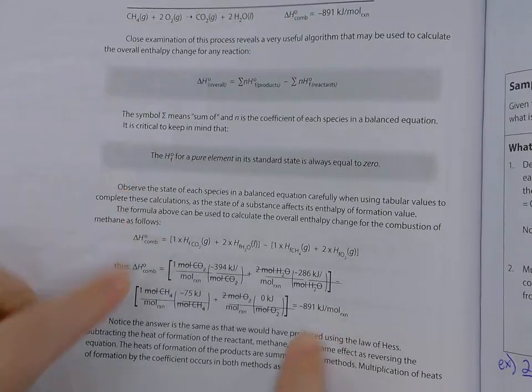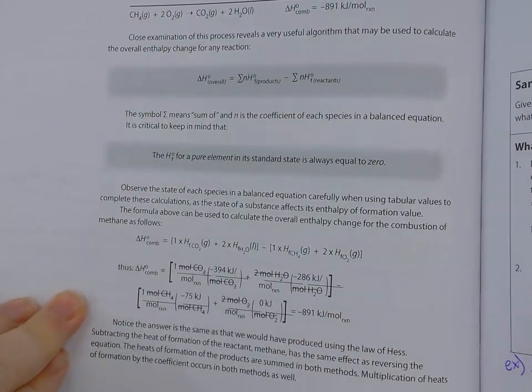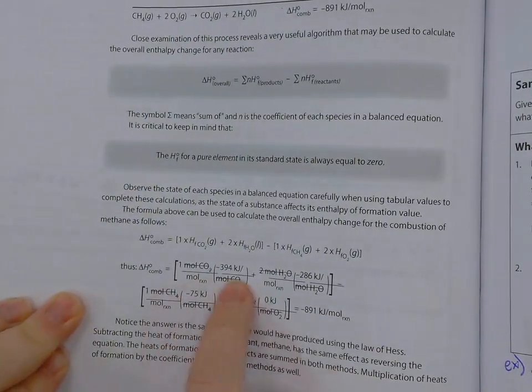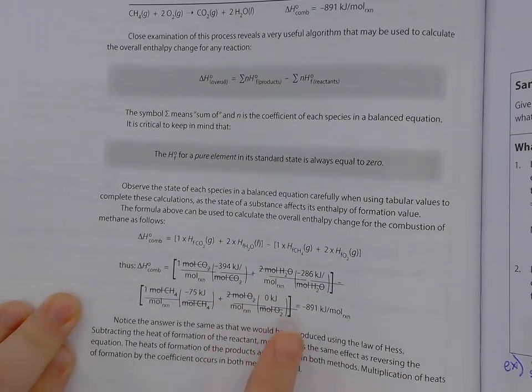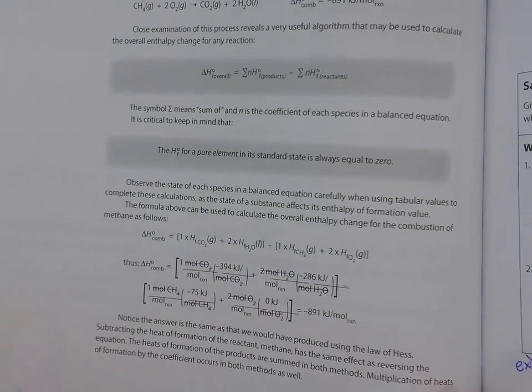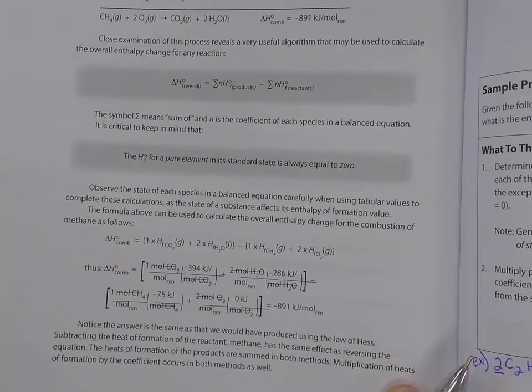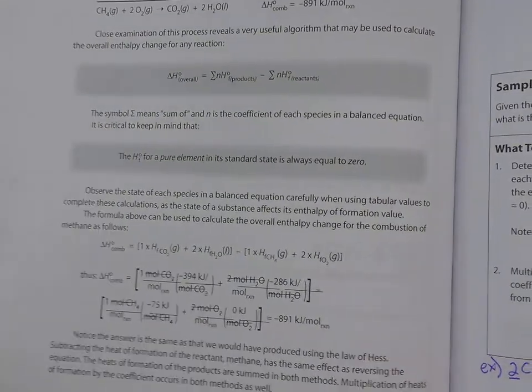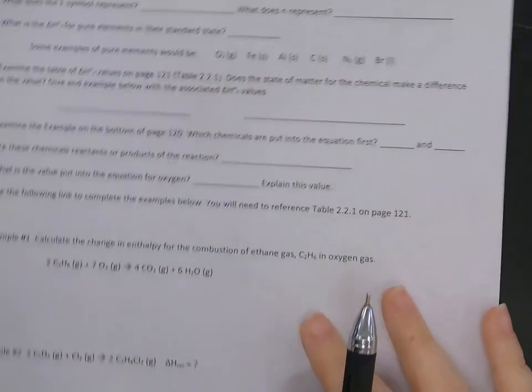So this is another way we can use Hess's Law, that the sum of the enthalpies of formation give us the enthalpy of the reaction. So we're going to do a couple of examples of this on your note sheet. You'll want that table nearby so you have it for reference.